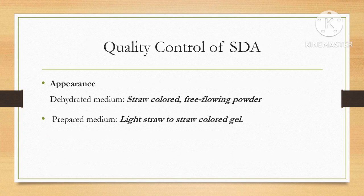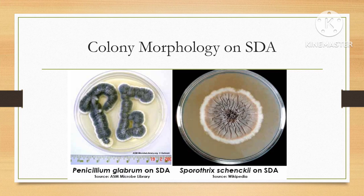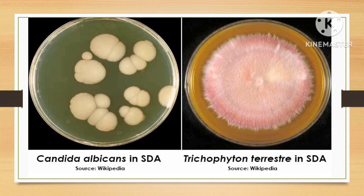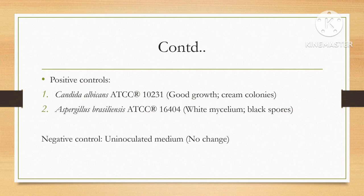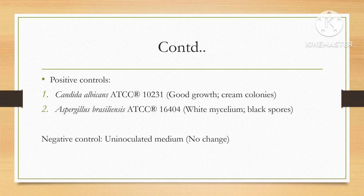Quality control of SDA can be assessed by appearance: dehydrated medium appears as a straw-colored, free-flowing powder, while a prepared medium shows a light straw to straw-colored gel formation. Typical colony morphologies include Penicillium glabrum on SDA, Sporothrix schenckii on SDA, Candida albicans, and the dermatophyte Trichophyton. Positive controls include Candida albicans ATCC 10231 (cream-colored colonies) and Aspergillus brasiliensis ATCC 16404 (white mycelial colonies with black spores).